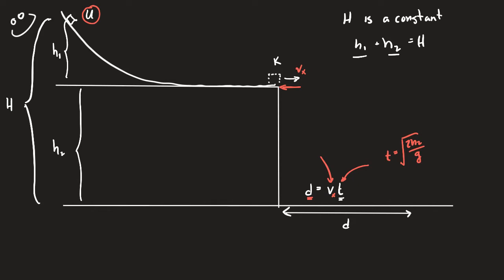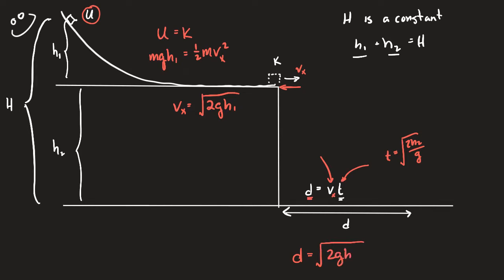We've derived the time-of-fall formula many times. For horizontal velocity, we use conservation of energy at the table surface: MGH1 equals one-half M Vx squared, which gives Vx equals the square root of 2GH1. Multiplying horizontal velocity by time in the air — the square root of 2GH1 times the square root of 2H2 over G — the G's cancel.